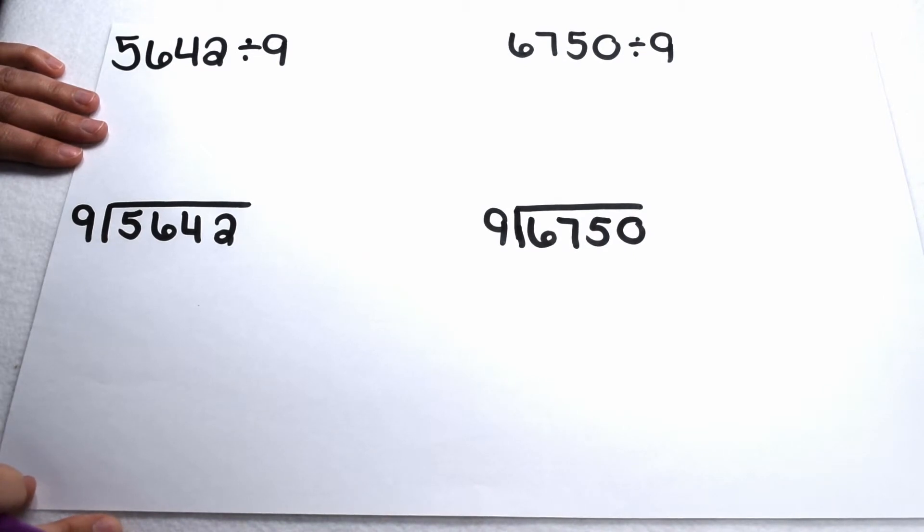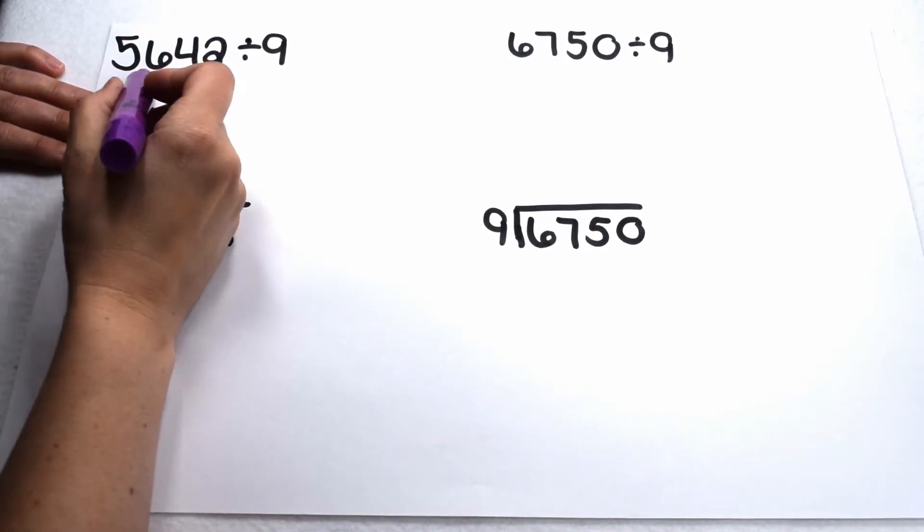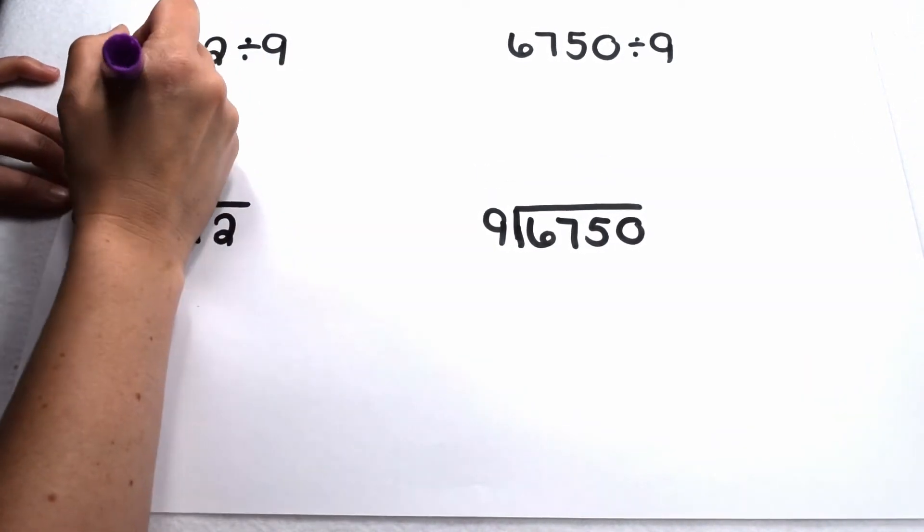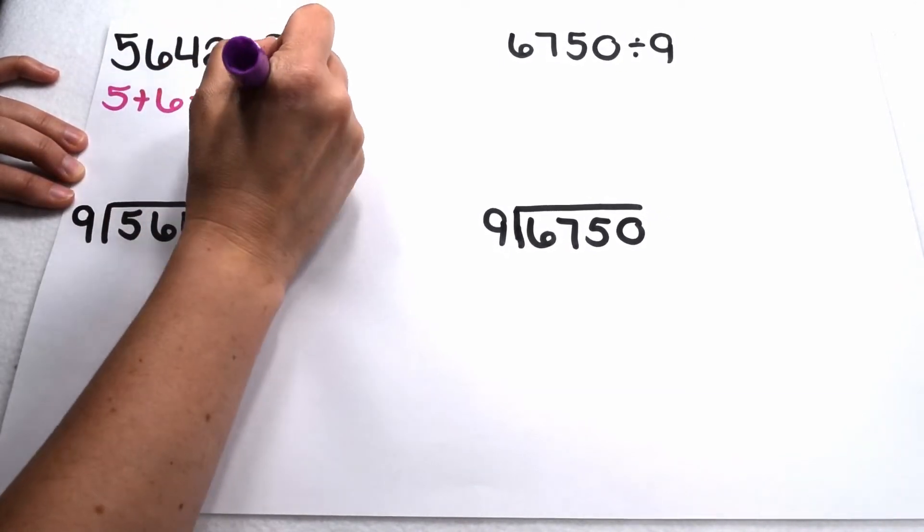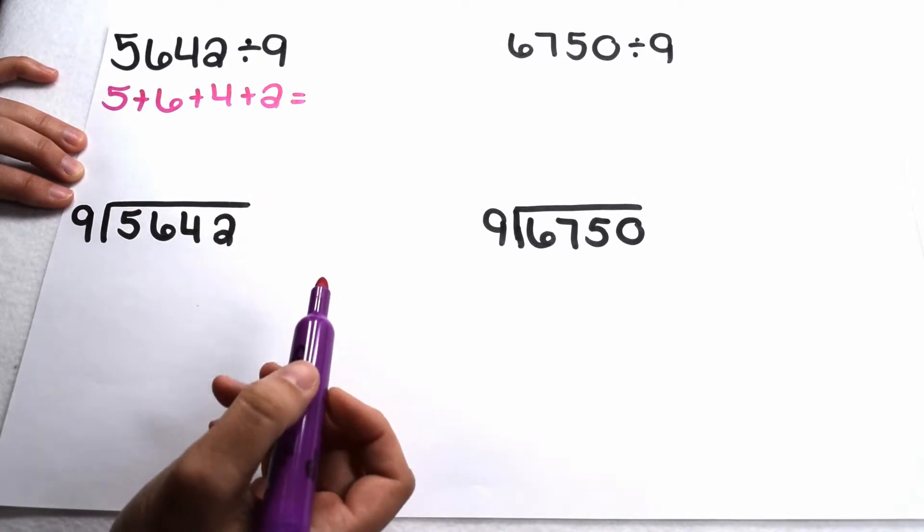Let's test some larger values to see if they're also divisible by 9. Here we have 5,642 divided by 9. If 5,642 is divisible by 9, then the sum of its digits should be divisible by 9.